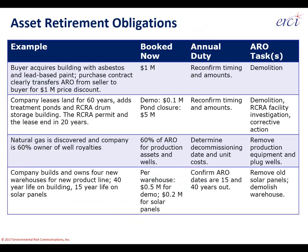For asset retirement obligations, the first example: a buyer acquires a building with asbestos and lead-based paint — not unusual. The purchase contract clearly transfers that ARO from the seller to the buyer in exchange for a million-dollar price discount. The initial activity for the buyer is booking that million-dollar asset retirement obligation right at the time the building is added to the asset side of the company's ledger.